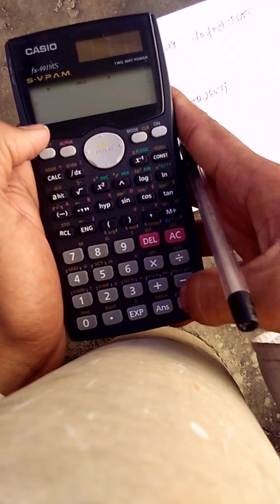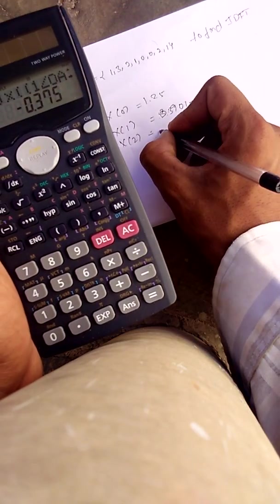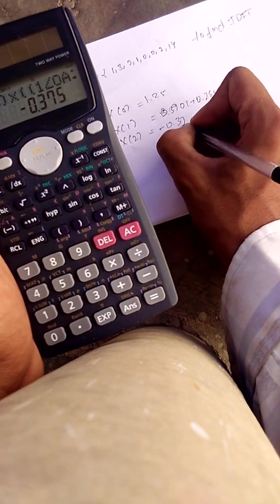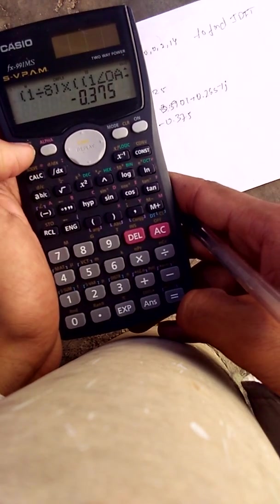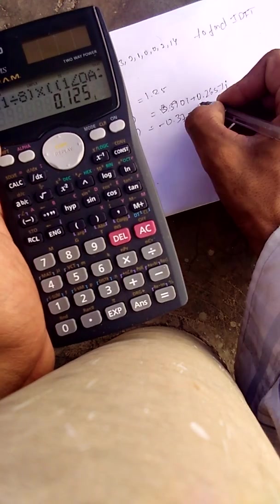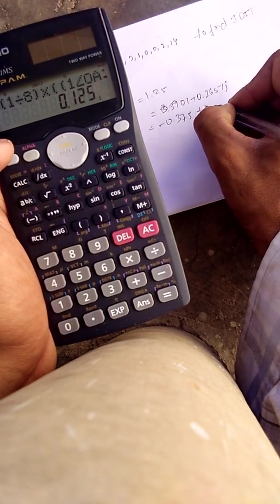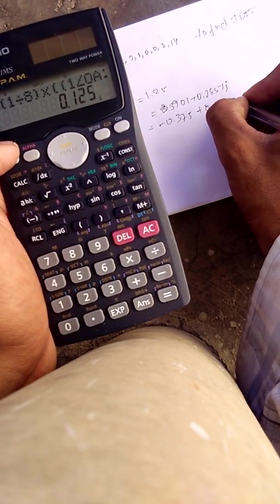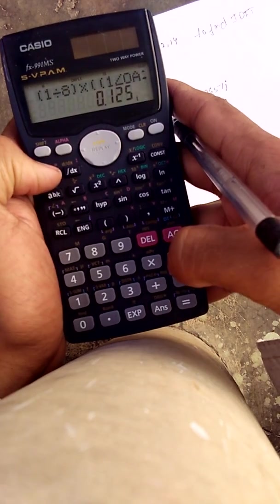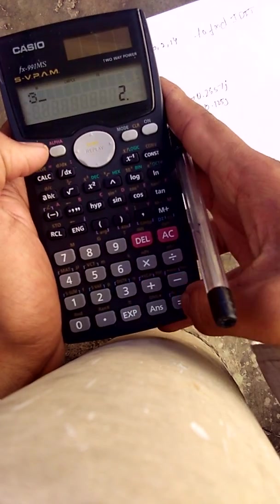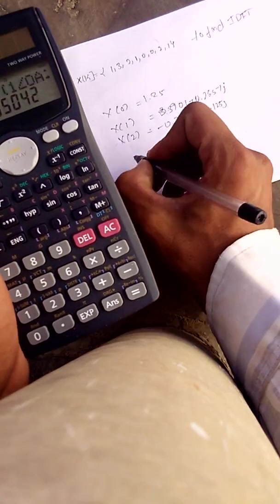x(2): press again Calc, press 2. x(2) is equal to minus 0.375. Press Shift and Equals, check for imaginary term - plus 0.125j.